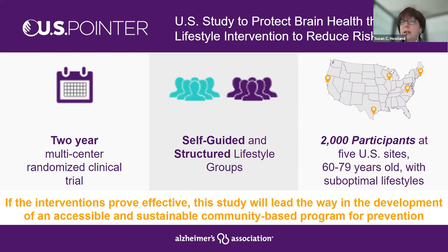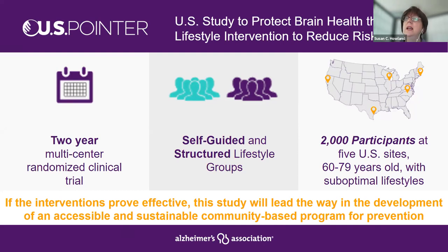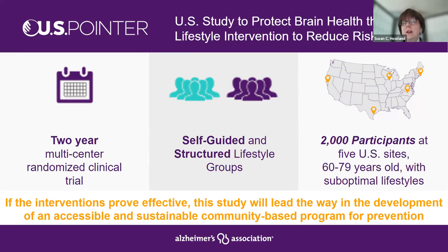Eligibility is individuals between 60 to 79 who do not have any memory problems at the moment, but have a primary relative — a mom, sibling, or dad — with a history of memory problems. And they must have room for improvement in terms of their lifestyle behavior. So these are people who probably have not had a great diet, active lifestyle, or cognitive stimulation. Hopefully, the US POINTER study will inform an accessible and sustainable community-based lifestyle program for risk reduction.